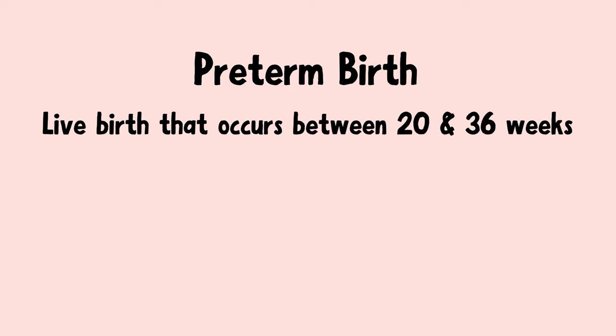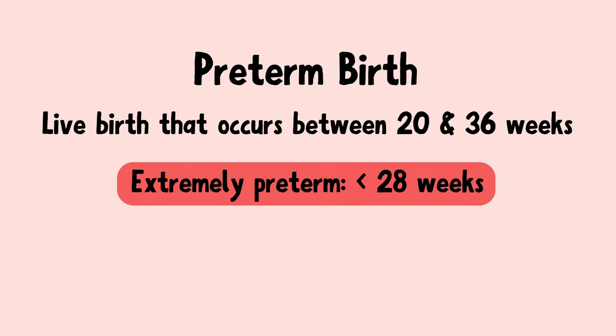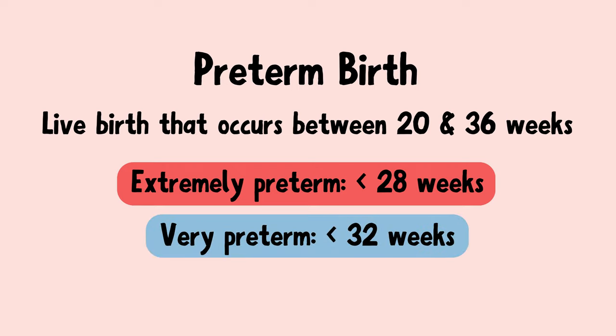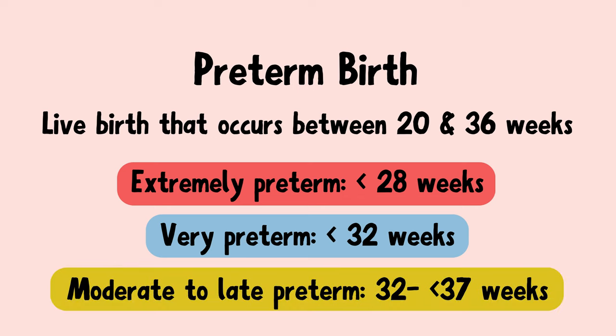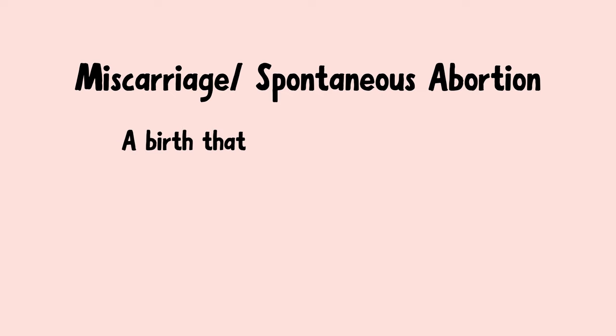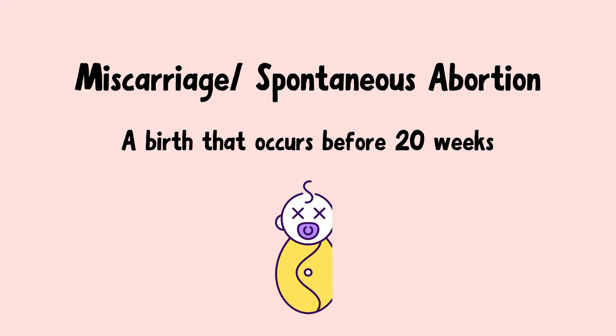The WHO further categorizes preterm births into: extremely preterm, which occurs before 28 weeks; very preterm, which occurs before 32 weeks; and moderate to late preterm, which happens between 32 to less than 37 weeks. A birth that occurs before 20 weeks of pregnancy is typically referred to as a miscarriage or spontaneous abortion, as a fetus born before 20 weeks is not viable.